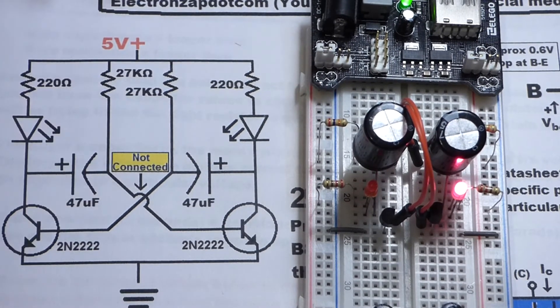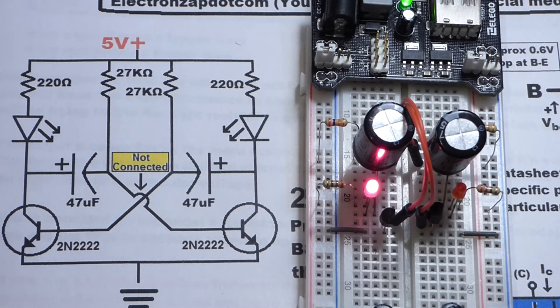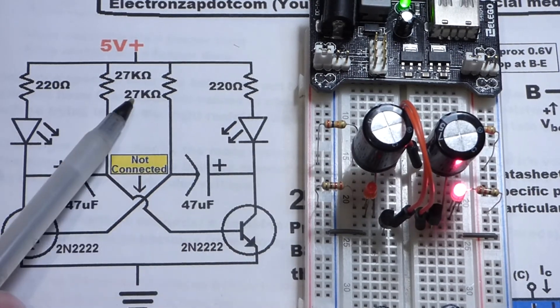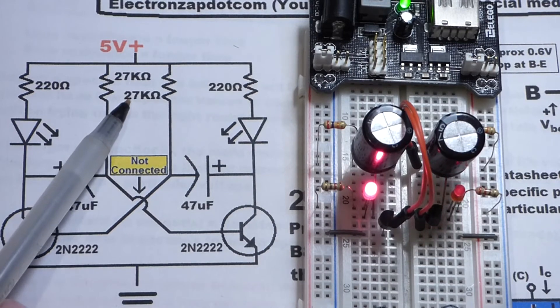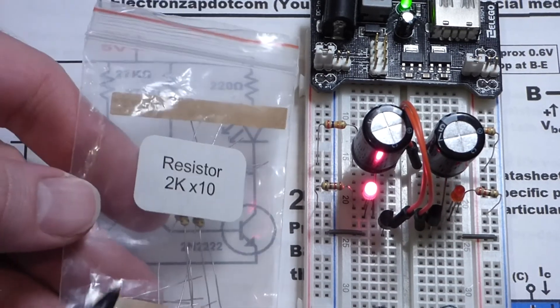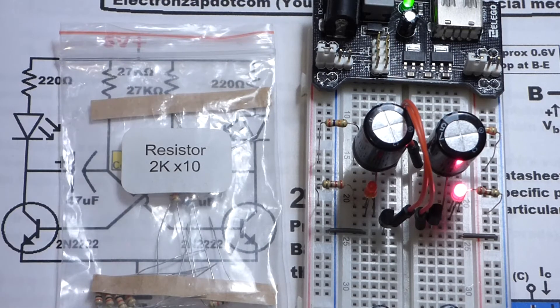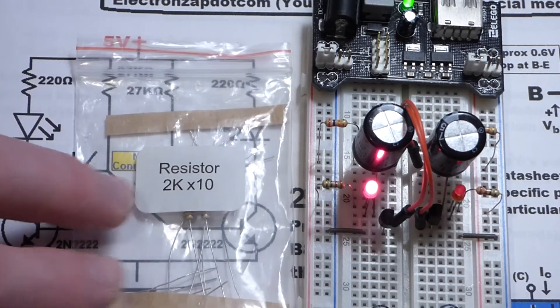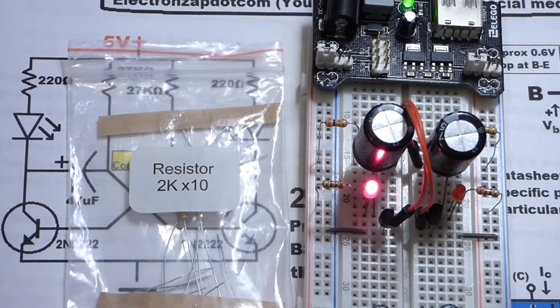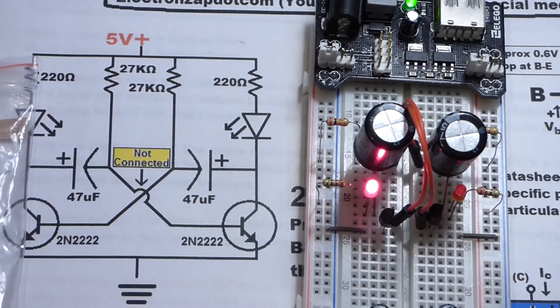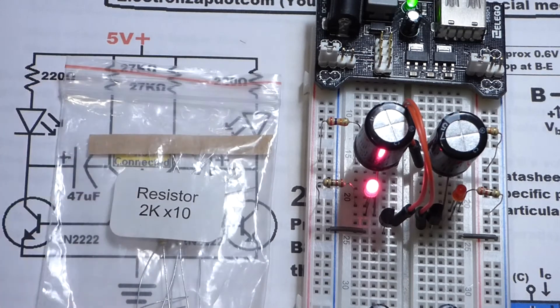But we can drop the resistance. So that more current gets to the capacitors. They charge faster. And so, since we increased the capacitance by 10 times, instead of 47, we have 470. Ideally, we would like one-tenth of the resistance. So that would be 2.7 kiloohms. I don't have a 2.7 kiloohm resistor in this particular kit. And so, I'm going to go with a slightly lower resistance. And so, we would expect that the LEDs would flash slightly faster than they did with the 47 microfarad capacitors with the 27 kiloohm resistors. So I will quickly do that now.